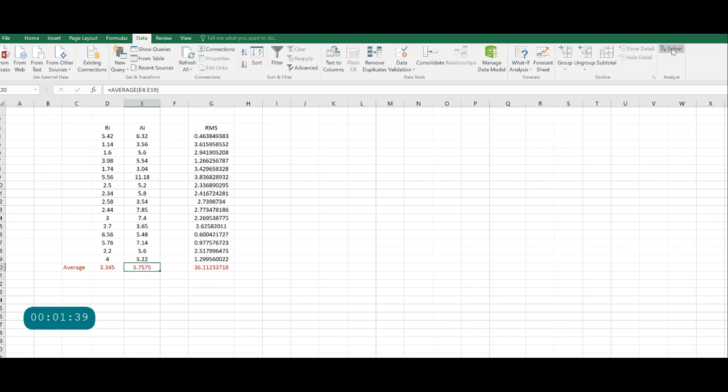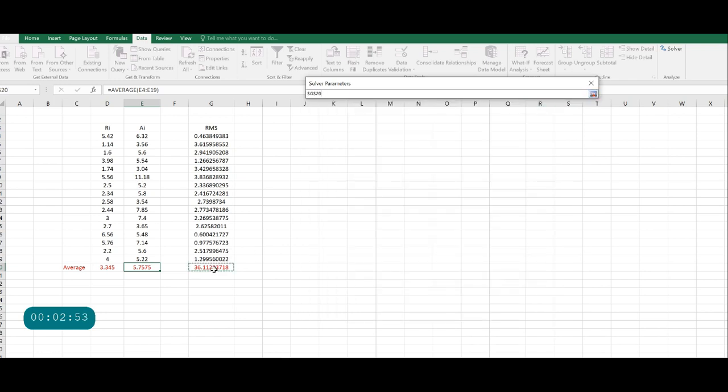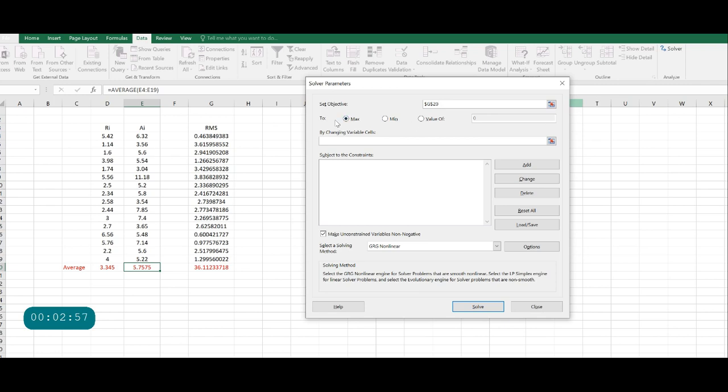Select solver function and set objective. The objective is to minimize this sum of RMS values, so select this value here. That is G20. Now for minimization, we are not maximizing here but minimizing, so select minimization.